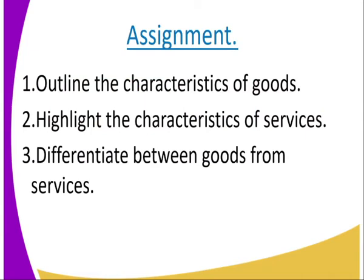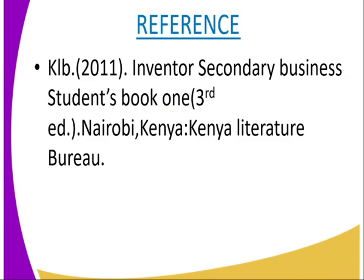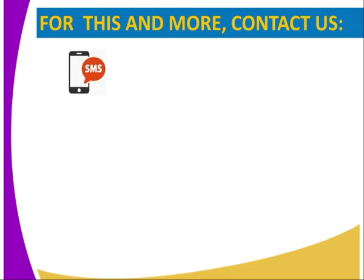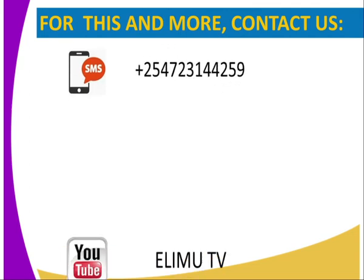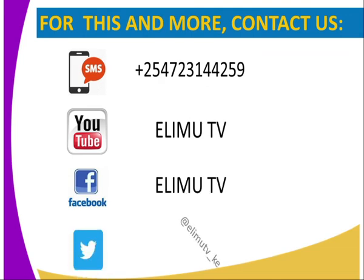Activity: number one, write the characteristics of goods. Number two, highlight the characteristics of services. Number three, differentiate goods from services. For reference, get the KELB 2011 Business Studies Book One. If you have any questions, reach us through SMS, YouTube, Facebook, or Twitter.